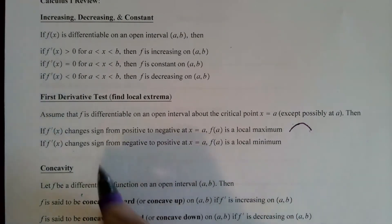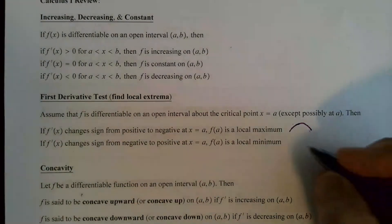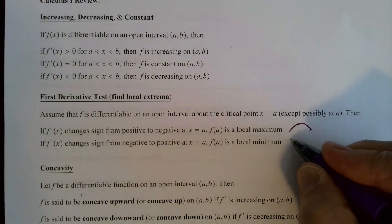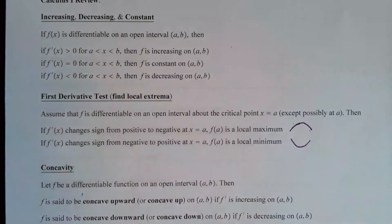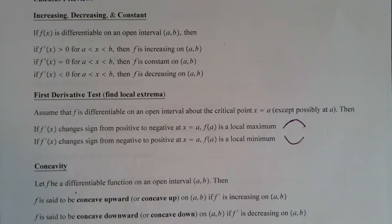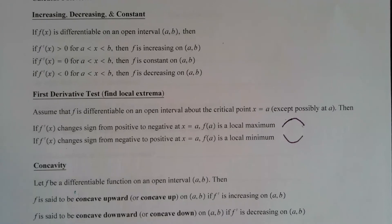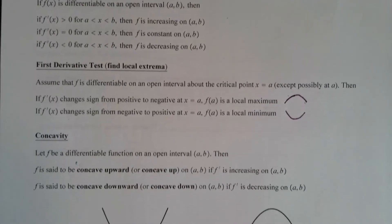Similarly, if the derivative changes sign from negative to positive, that means we go from decreasing to increasing, and we have a local minimum. So: increasing/decreasing gives local max, decreasing/increasing gives local min.